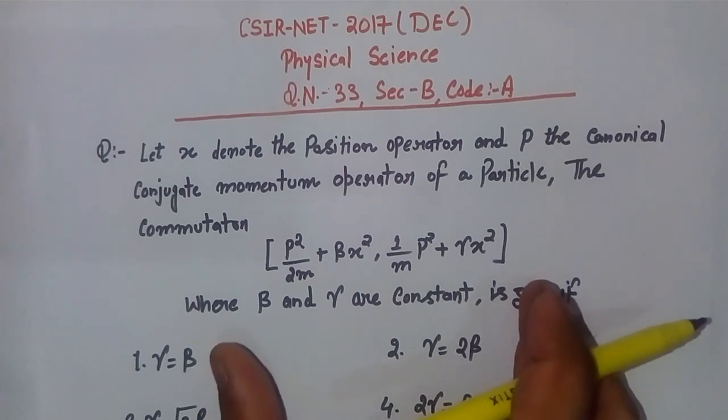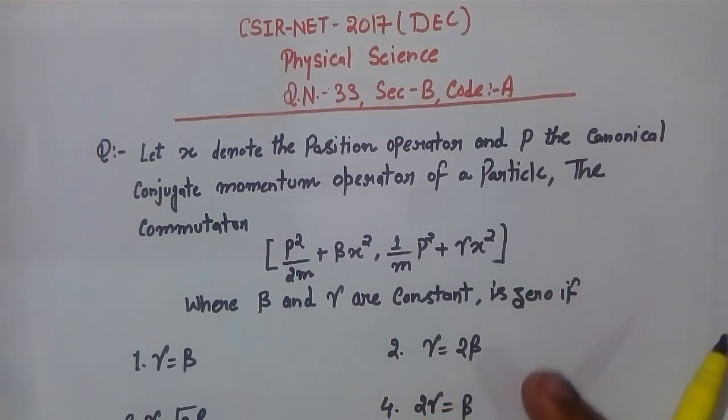In this problem, we have a commutator that equals zero. Based on this relation, we need to find out the relation between β and γ, which will help us identify the correct option.